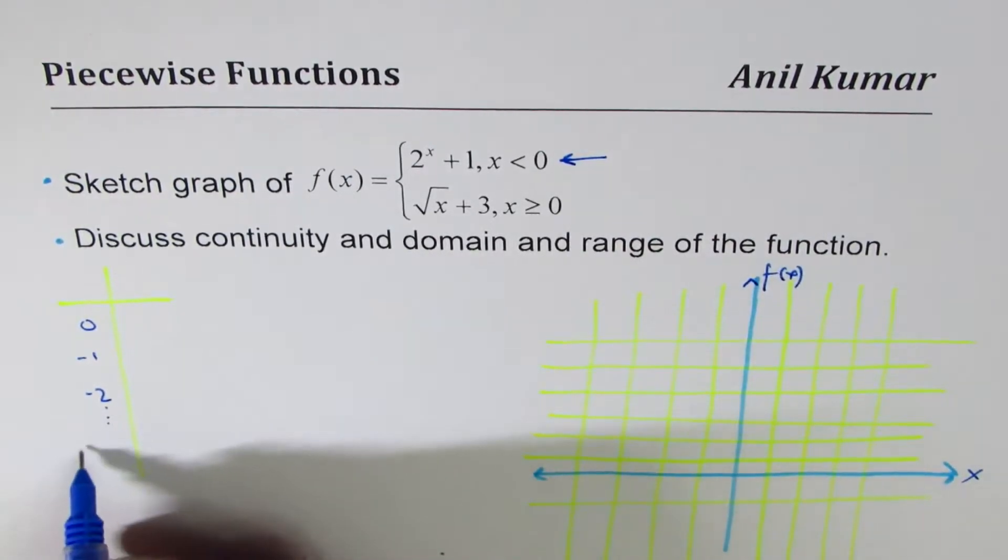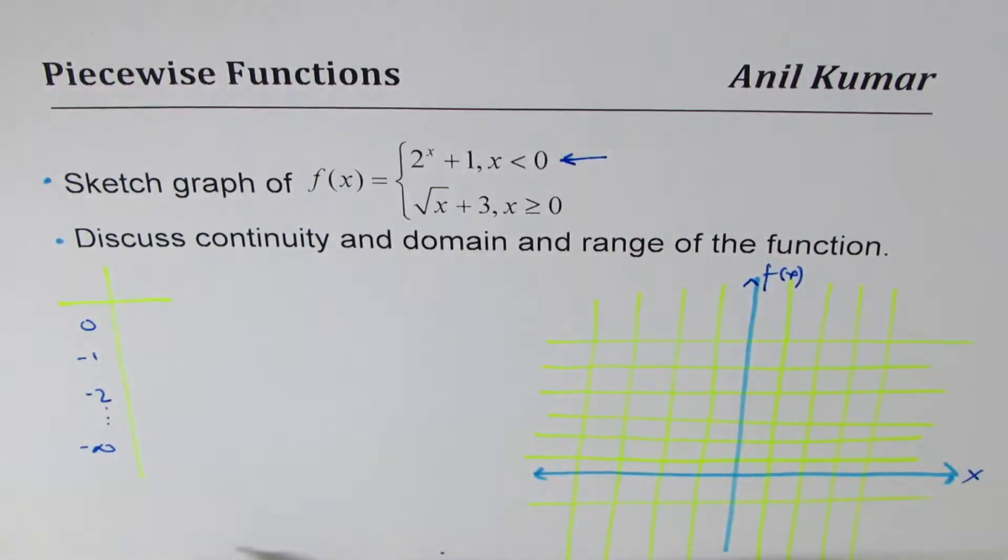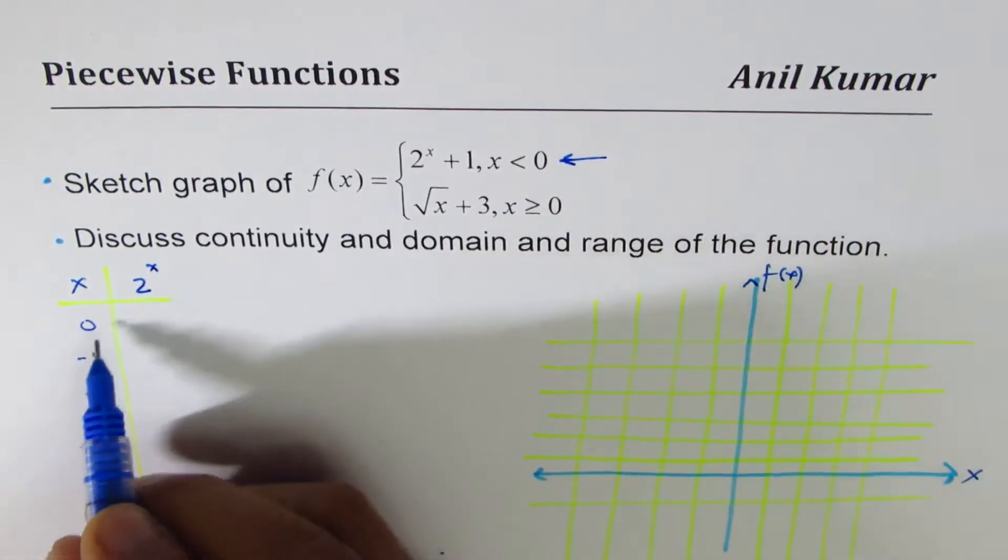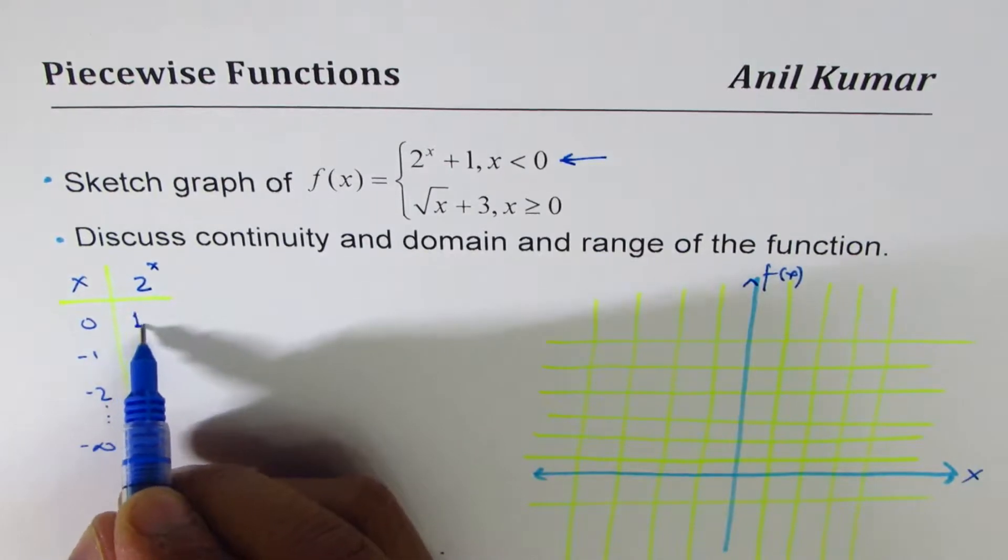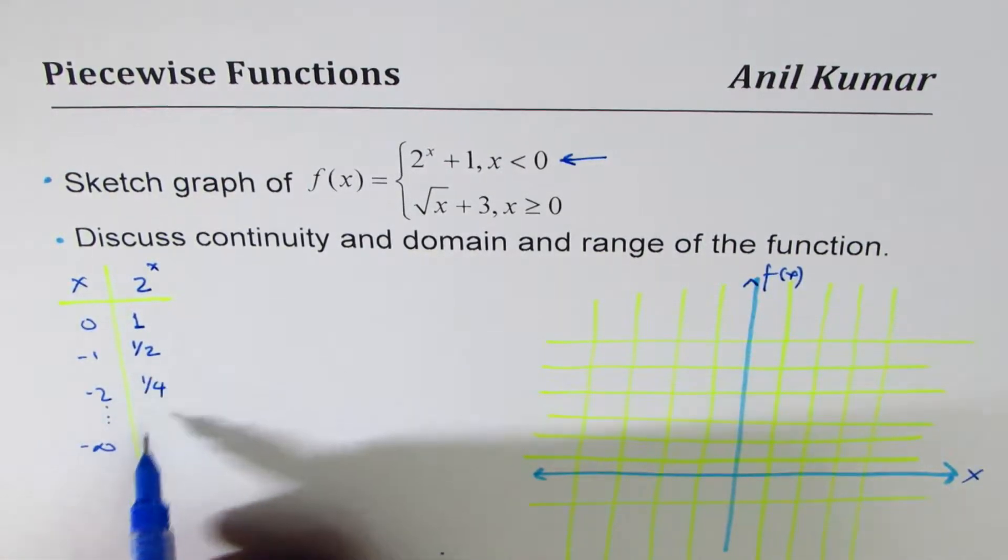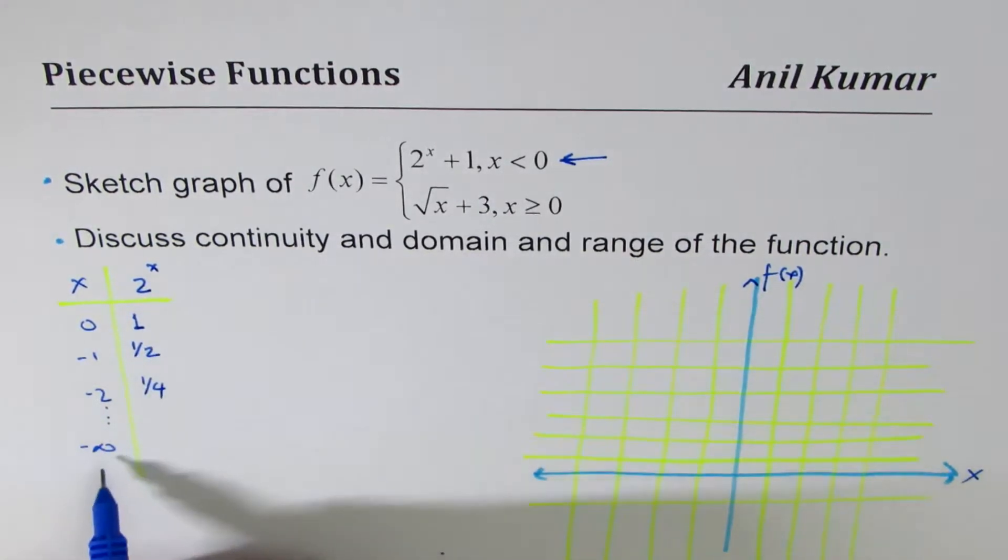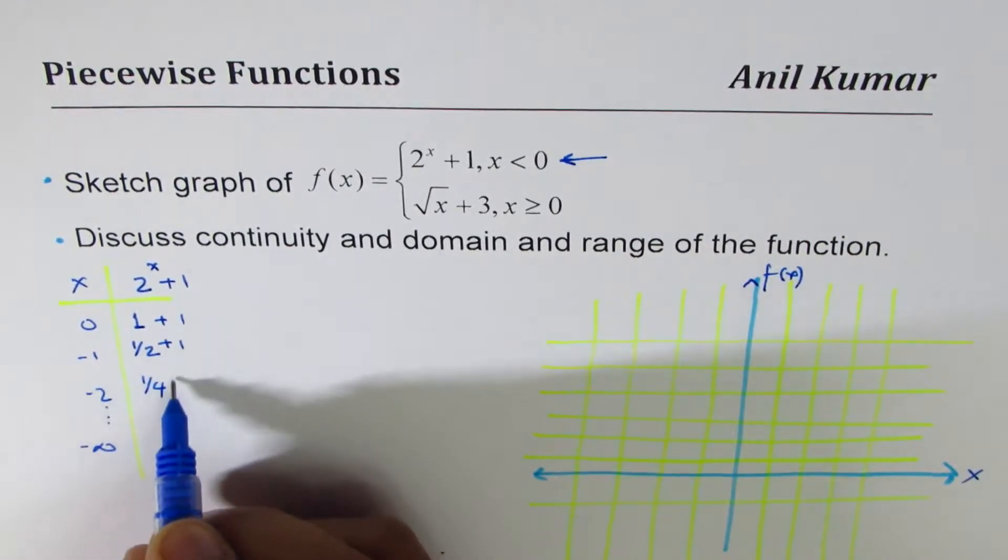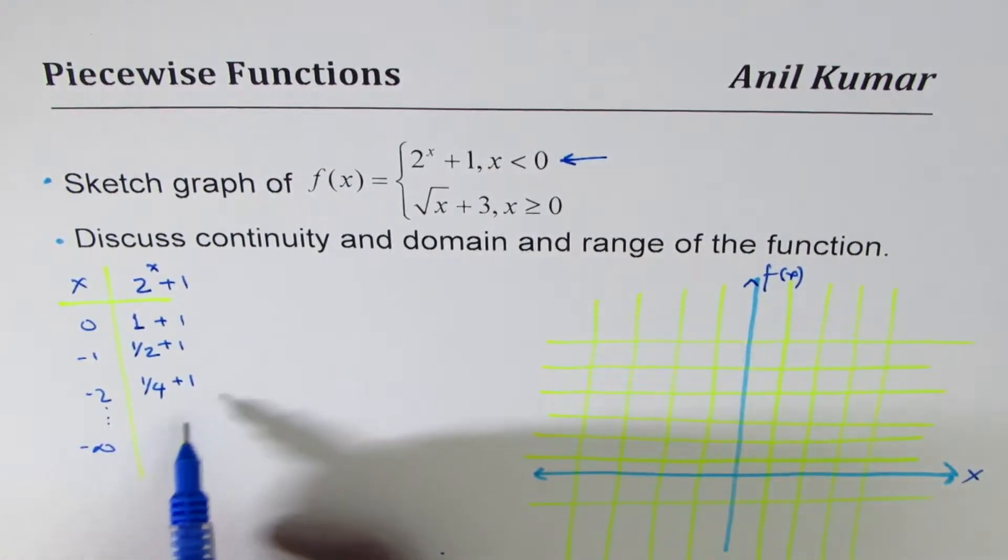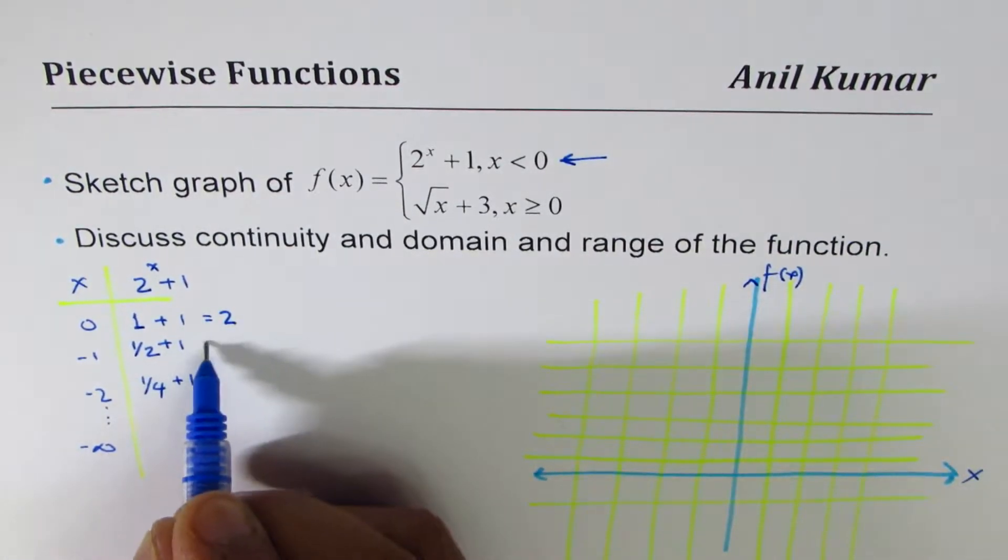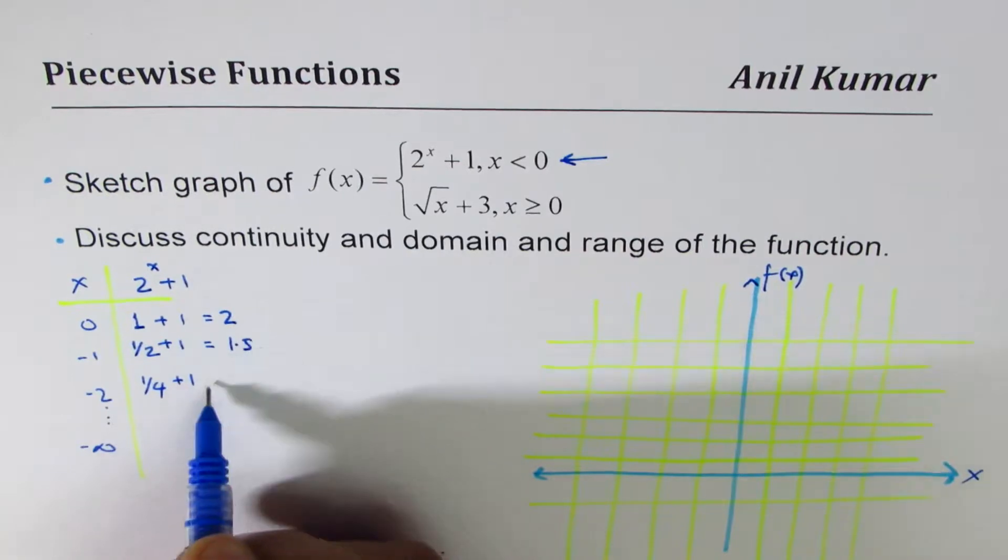So it could go to minus infinity, right? x values and then the y values. 2 to the power of x: anything to the power of 0 is 1; to the power of minus 1 is half. This will give you 1 over 4. And if x is very large negative, I mean, I should have added 1, right? Let me add 1 now.